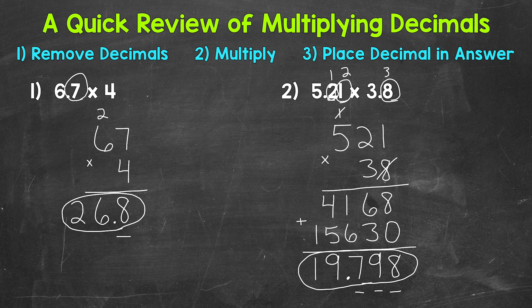So there you have it. There's a quick review of multiplying decimals. Remove the decimals. Multiply as you normally would with whole numbers. And then place your decimal in the answer. Look at the original problem. See how many digits are to the right or are behind a decimal. And then your answer is going to match that.